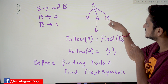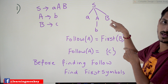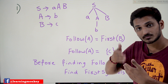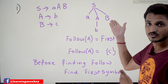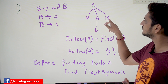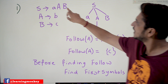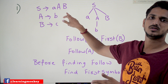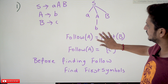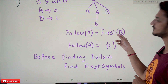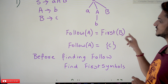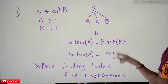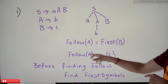From S → AB, after completion of A the next symbol is B, so FOLLOW(A) = FIRST(B). FIRST(B) means the first terminal symbol encountered for B. From our grammar, FIRST(B) = C, so FOLLOW(A) = C. This is the first condition.